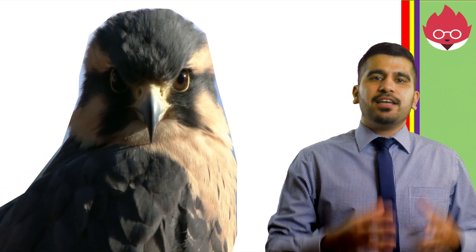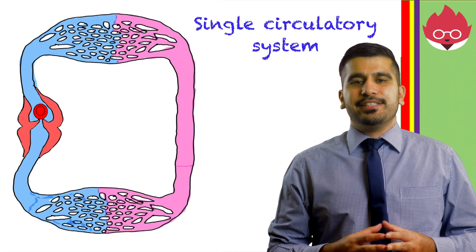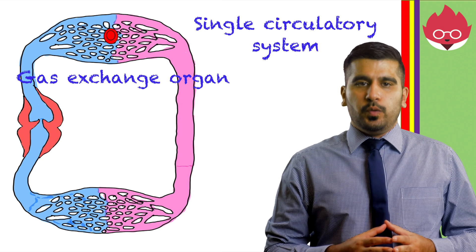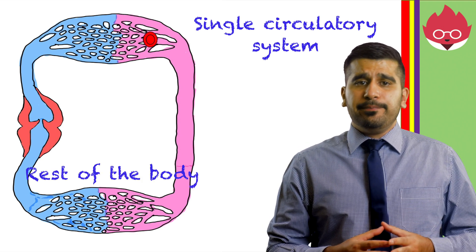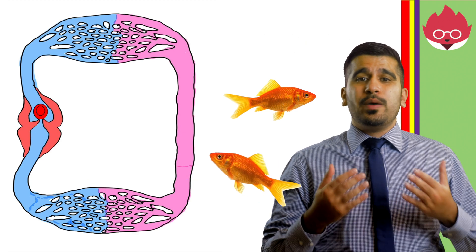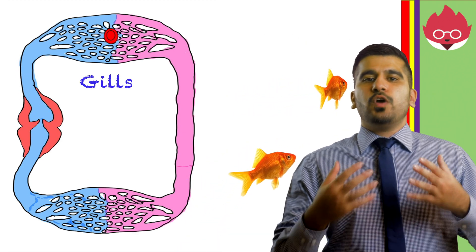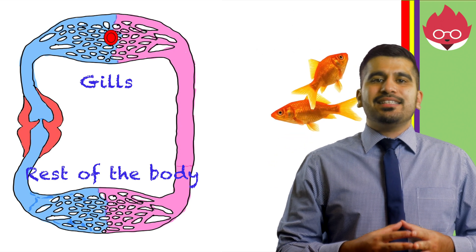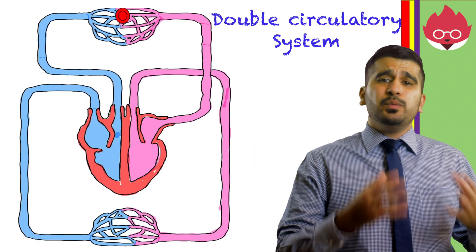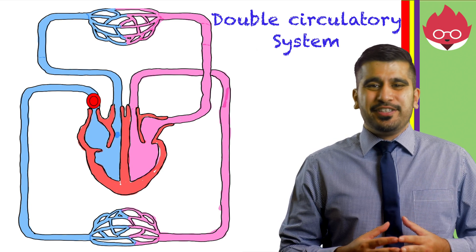In animals, there are two main types of circulatory system. A single circulatory system, where blood is pumped from the heart to the gas exchange organ and then directly around the body. You can see this type of system in fish, where blood is pumped to the gills where they collect oxygen, and then this oxygen-rich blood is sent to the rest of the body. The second type is found in humans.